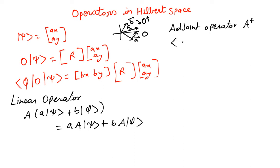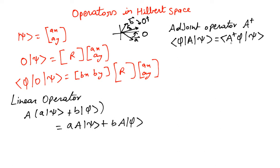Which basically means the adjoint of an operator is written as: phi A psi equals... This is an operation that produces an equivalent dot product or inner product. And that is what the adjoint of an operator A is.